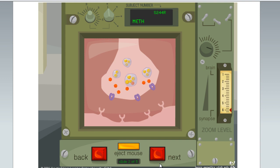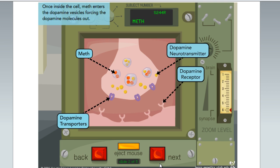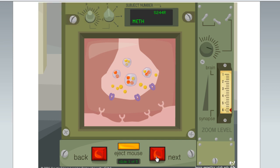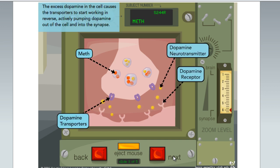Once inside the cell, meth enters the dopamine vesicles forcing the dopamine molecules out. The excess dopamine in the cell causes the transporters to start working in reverse, actively pumping dopamine out of the cell and into the synapse.